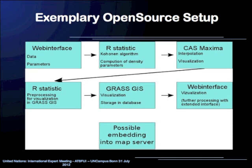The data is processed by the Kohonen algorithm for data reduction and for identifying some clusters, with additional information about some density factors. An interpolation using Gaussian mappings is done within this step. This data is then processed back to R statistics for preprocessing the visualization by GRASS GIS, which then performs additional visualizations and storage in the database. Back at the web interface, the graphical representations of the computed density mappings are shown.